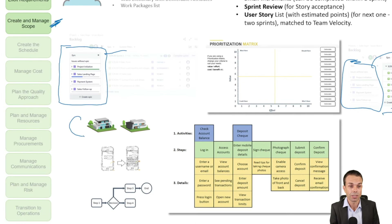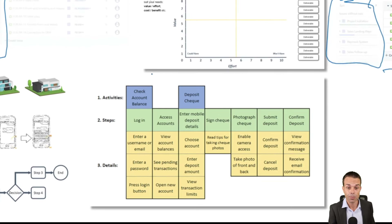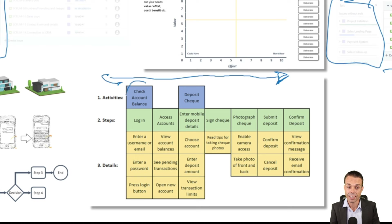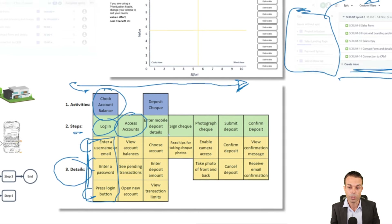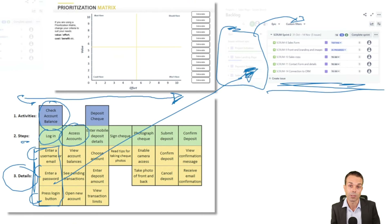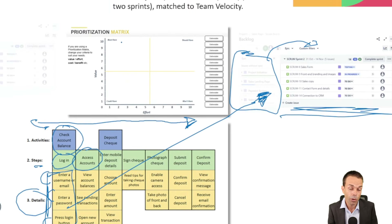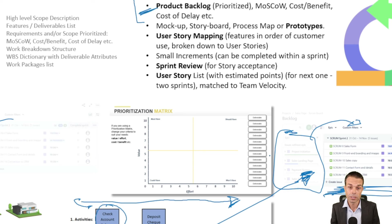We're going to use mock-ups and storyboards for our scope to show people what it's going to look like. User story mapping is another way of decomposing items — we walk through the system from start to finish and identify the features we're adding. For example in a bank app: checking the account balance, then breaking that down — logging in, accessing our accounts, entering a username, entering a password, pressing the login button. Those are the things we want to deliver in our user stories during a sprint. We prioritize items from the product backlog by cost-benefit, value, or effort.